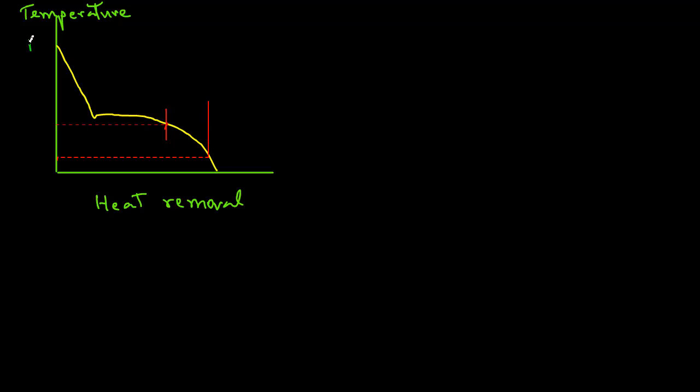We have the initial temperature Ti, and then this point we selected on the curve, we call it Tfm, which is the mean freezing temperature. That is dividing this temperature plot into two sections. And then the final temperature of the product at the end of freezing as Tc.